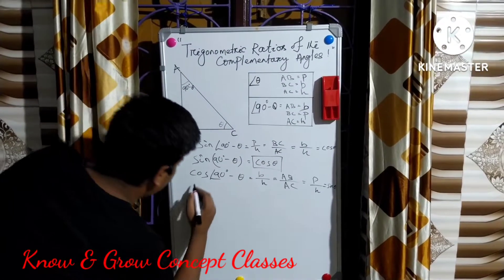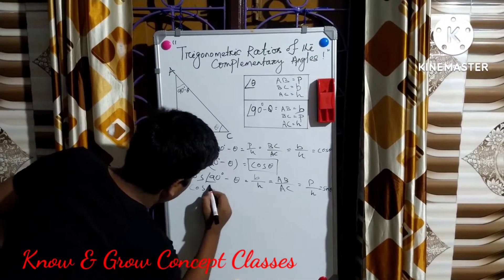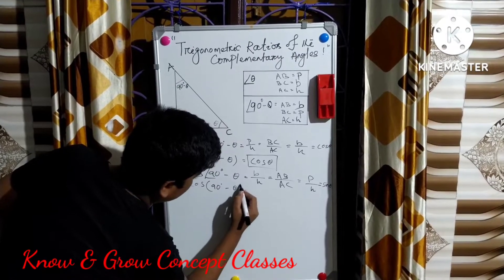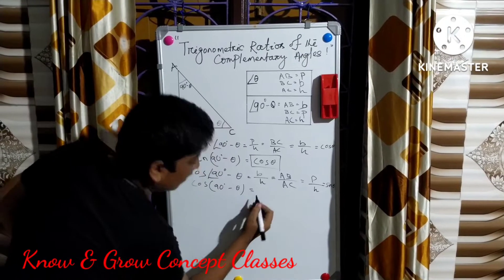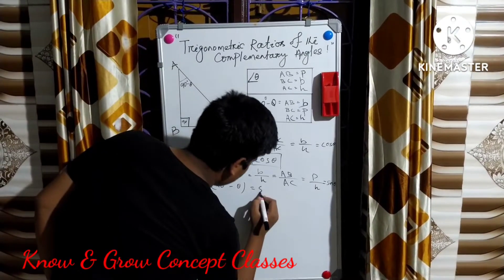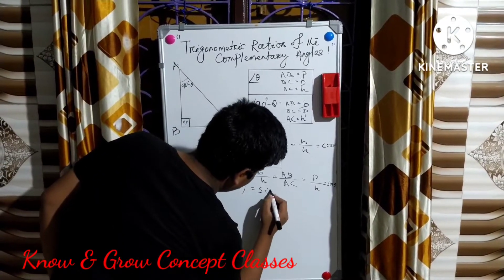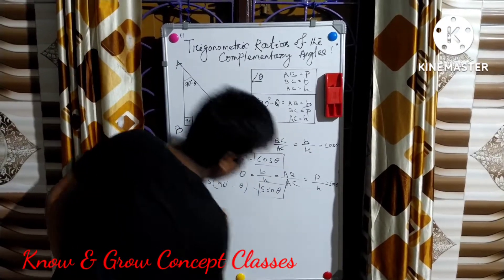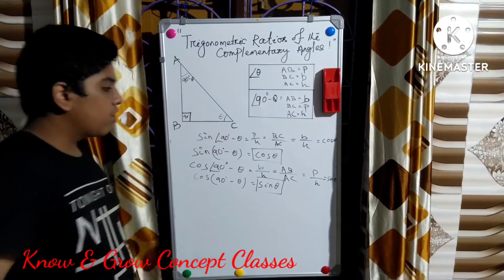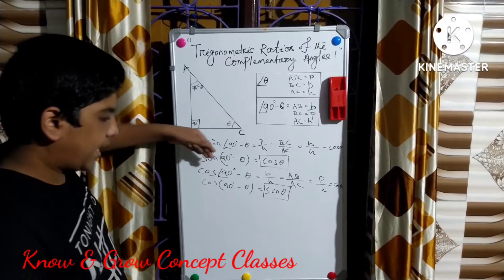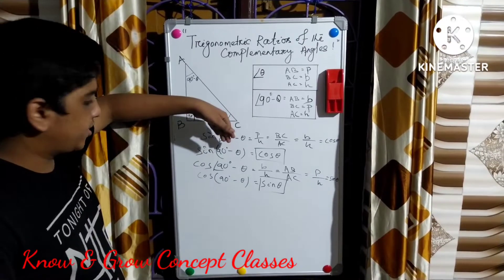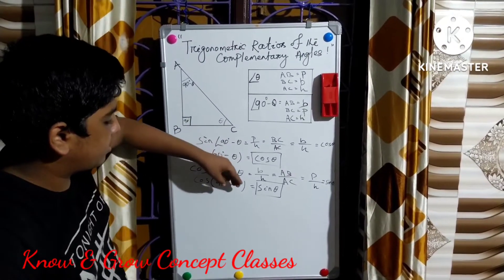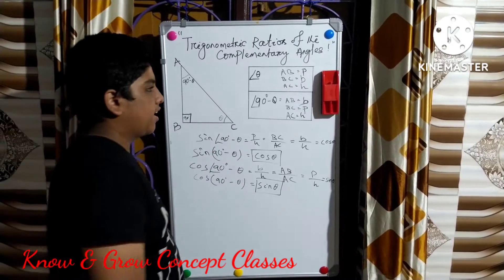So we can write cos(90° - θ) = sin θ. We conclude two formulas: sin(90° - θ) = cos θ, and cos(90° - θ) = sin θ.